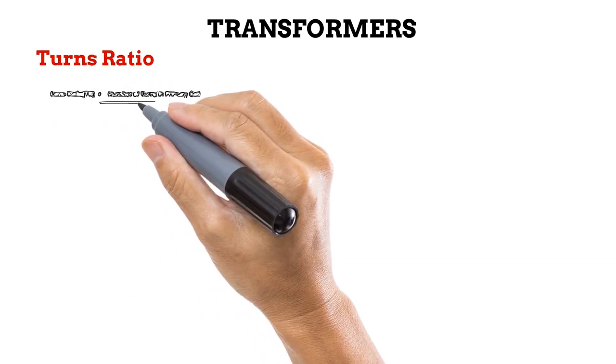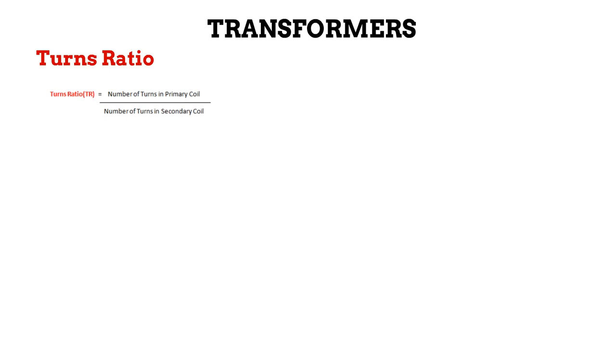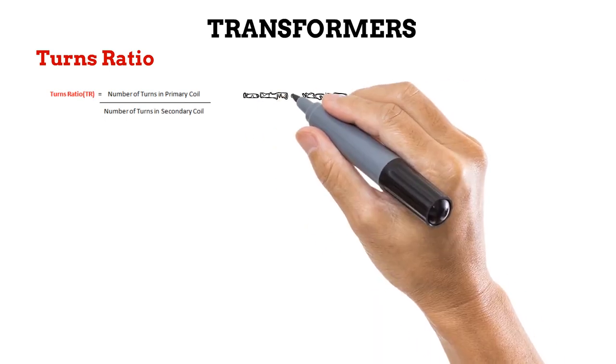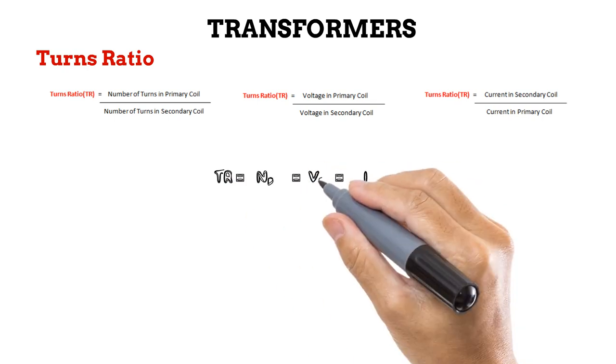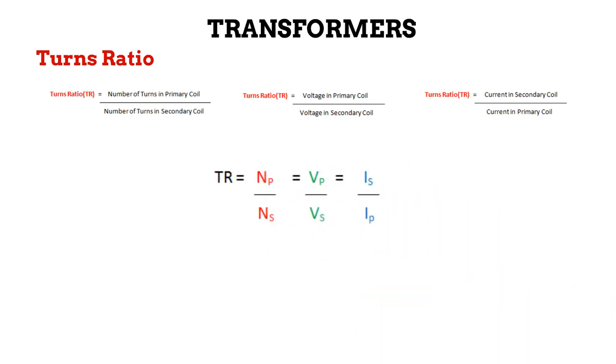An important property of a transformer is its turns ratio. This is the ratio of the number of turns in the primary coil to that in the secondary coil. It is useful because the turns ratio is also the ratio of voltage induced in the primary coil to that induced in the secondary coil. It is also the ratio of current induced in the secondary coil to that in the primary coil. These equations help us to estimate one value when we know others.